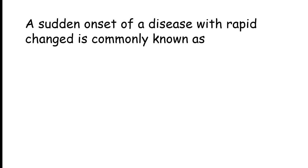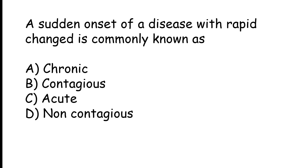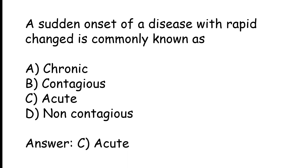A sudden onset of a disease with rapid change is commonly known as: Chronic, Contagious, Acute, or Non-Contagious. The correct answer is Option C. A sudden onset of a disease with rapid change is commonly known as Acute.